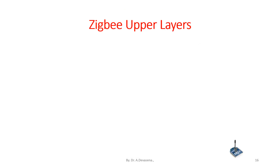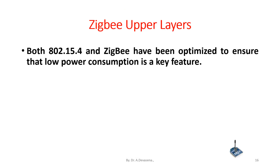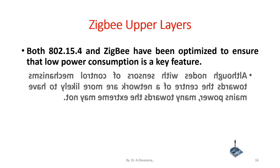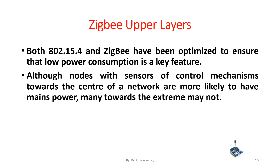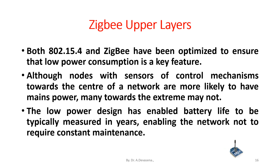Both IEEE 802.15.4 and ZigBee have been optimized to ensure that low power consumption is a key feature. The low power design has enabled battery life to be typically measured in years, enabling the network to not require constant power.